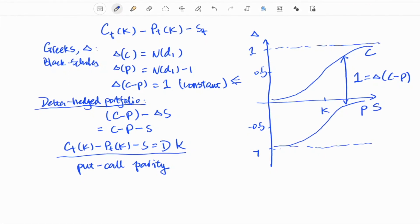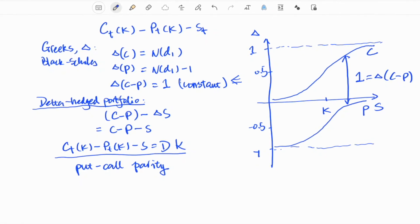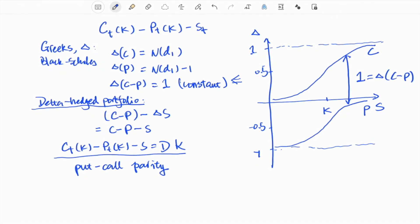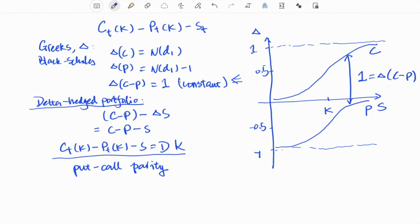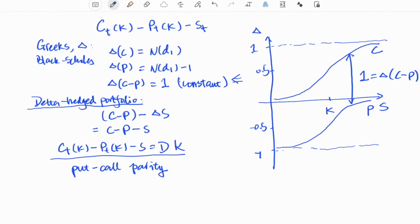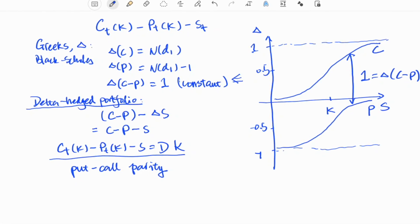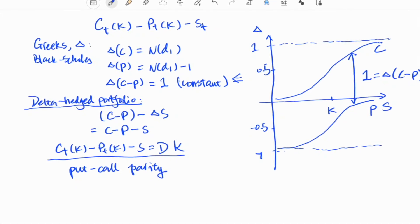You may also recall gamma, which is the derivative of delta with respect to the underlying price. It is the same for the call and put with the same parameters, since the shapes of the two curves are exactly the same. So the gamma for C minus P is 0 here.